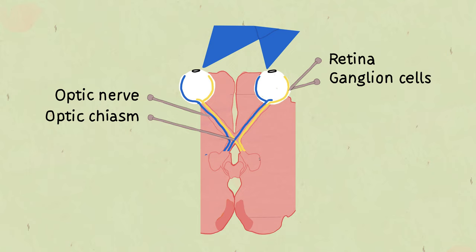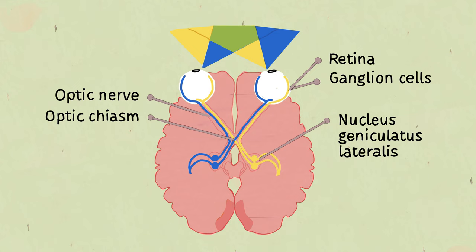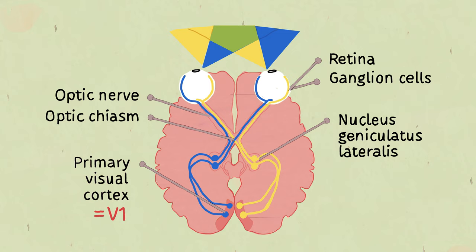The optic nerve projects to the nucleus geniculatus lateralis that lies in the thalamus. Visual information is then sent to the primary visual cortex, also referred to as V1. Here, a conscious experience of vision arises and visual information is further distributed to other visual areas for detail processing.